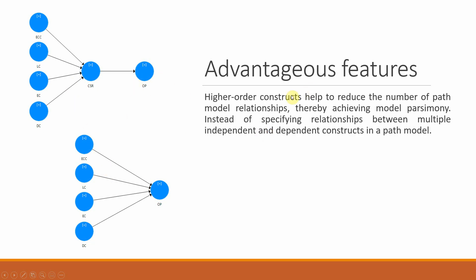Now let's look at the advantages and features of higher order constructs. ECC, LC, EC, and DC are the sub-dimensions or lower order constructs of CSR, which is the higher order construct. One approach is to look at the individual impact of each of these dimensions on organizational performance. However, the key advantage of higher order constructs is that they can reduce the number of path model relationships, thereby achieving model parsimony.